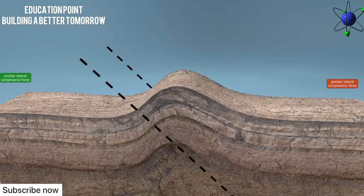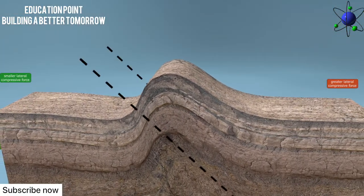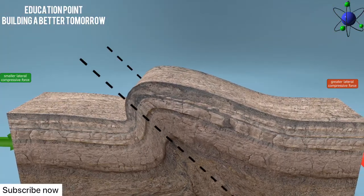When one of the lateral forces is much greater than the other, the angle becomes greater too and a recumbent fold is formed.